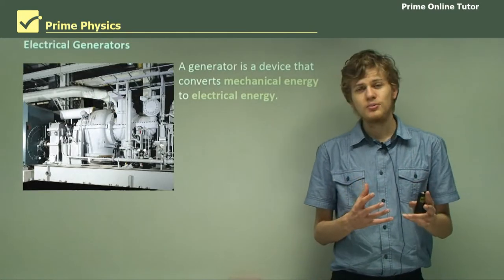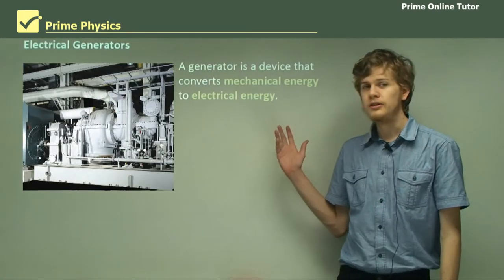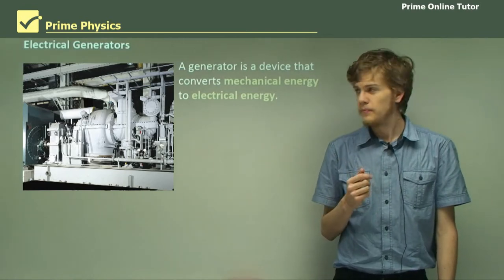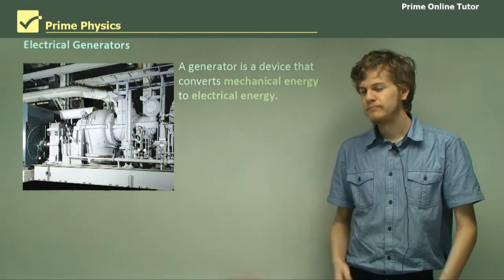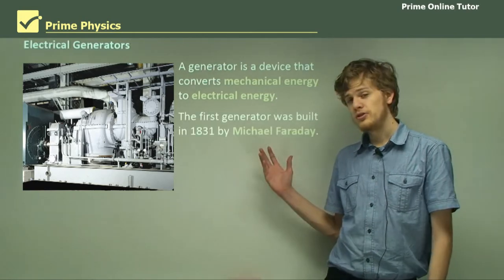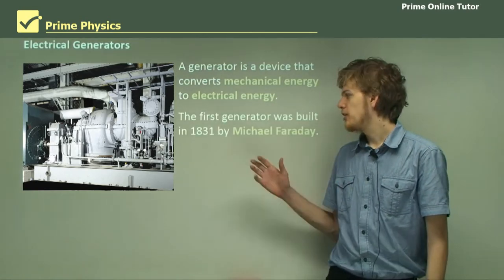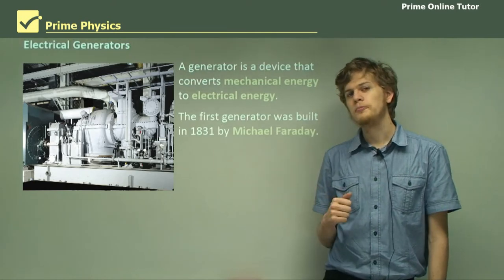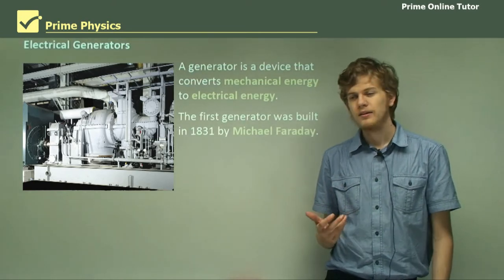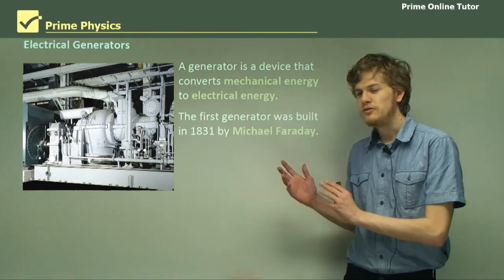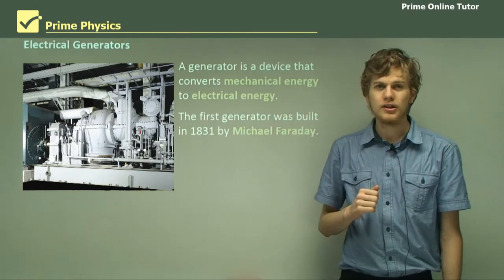A generator is a device that turns mechanical energy — that is, kinetic energy — into electrical energy. The first generator was invented in the 1800s by a fellow named Michael Faraday, who discovered the principles of electromagnetic induction, which allows the transformation of mechanical energy to electrical energy.